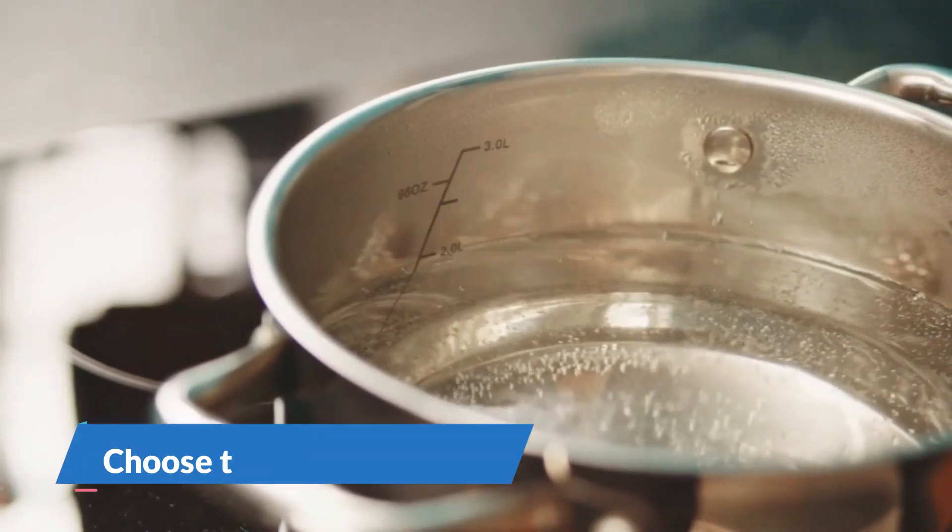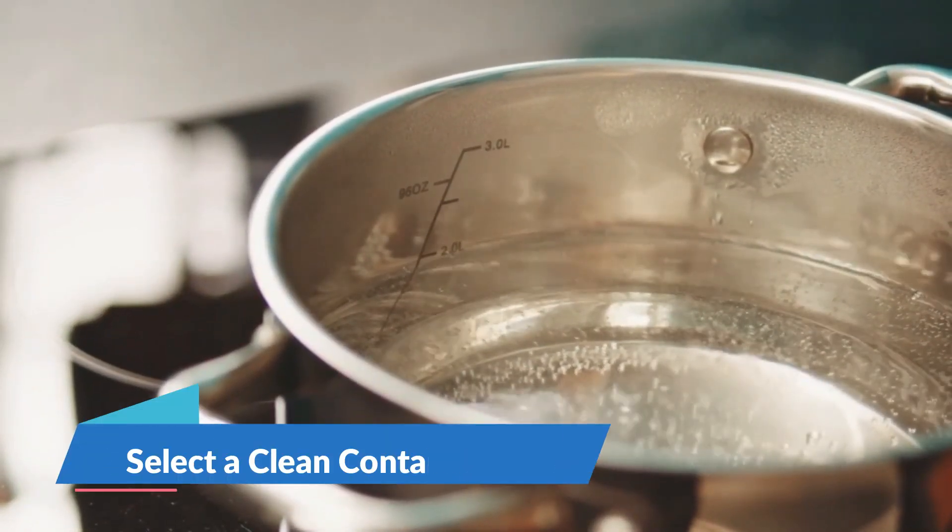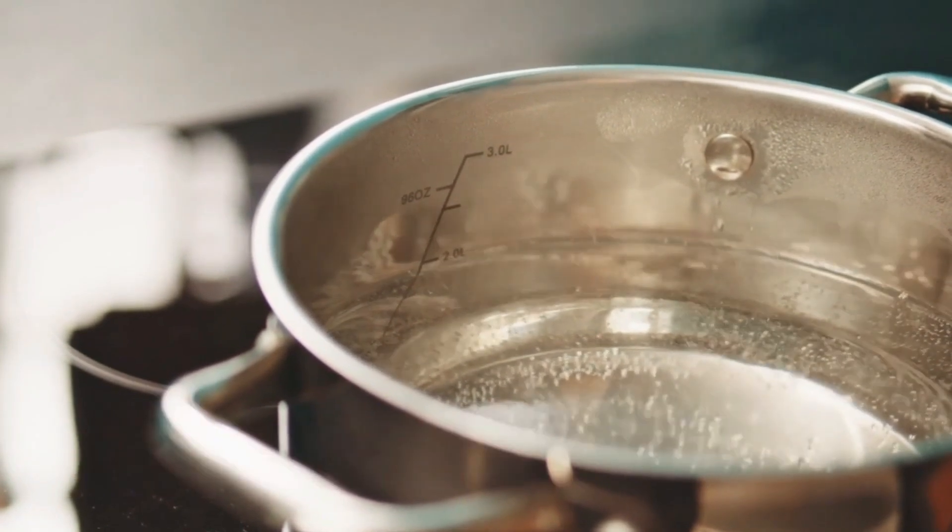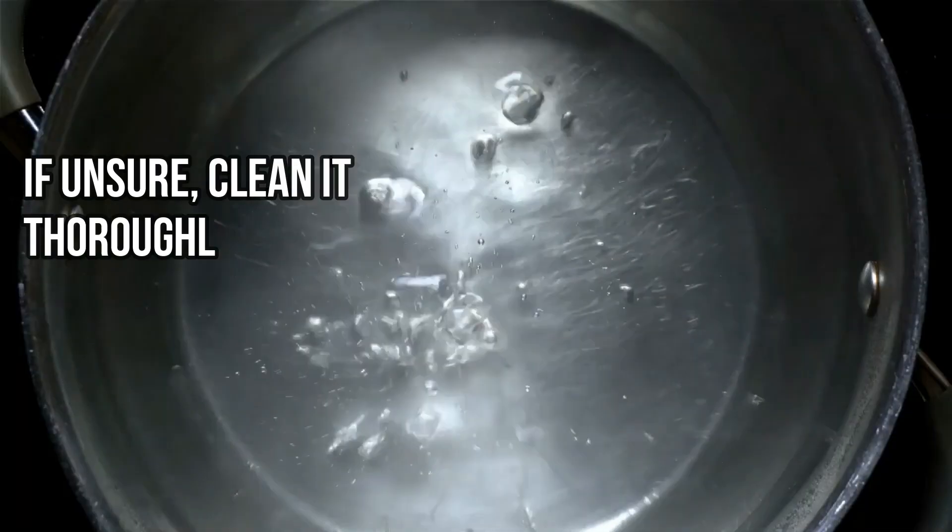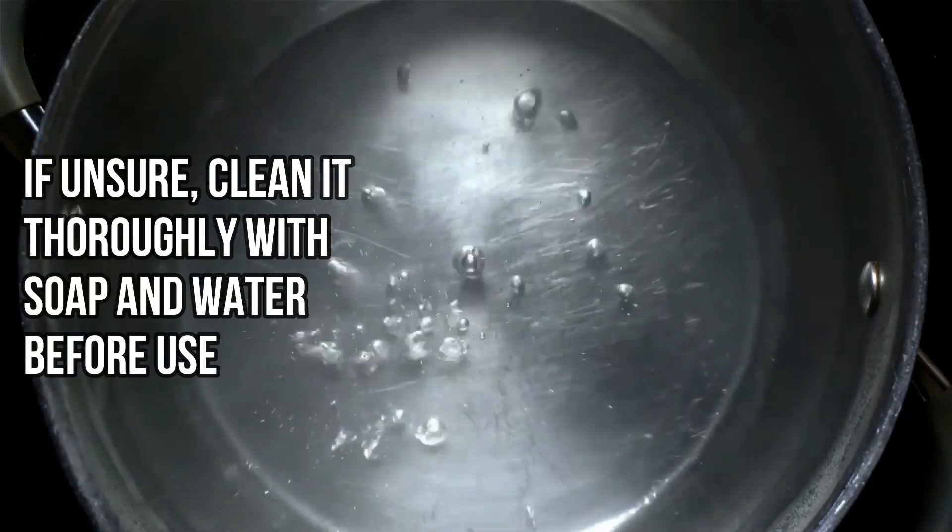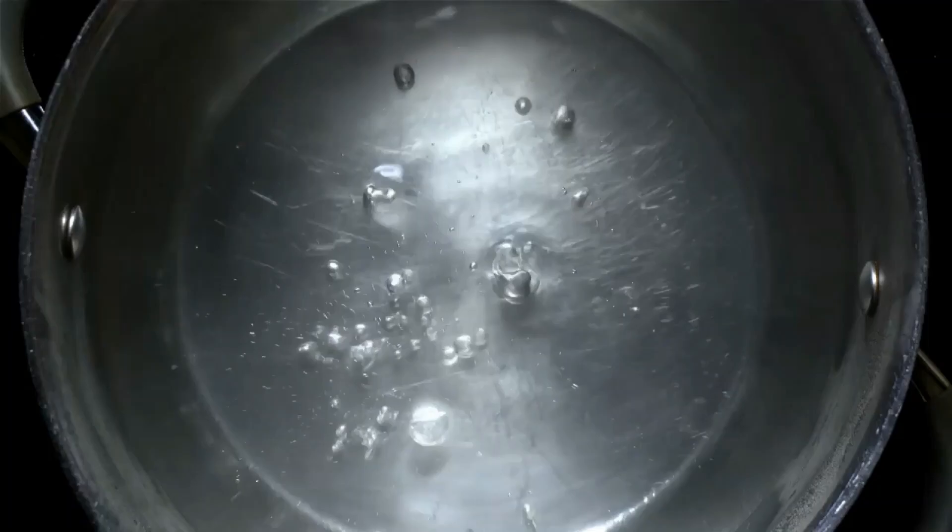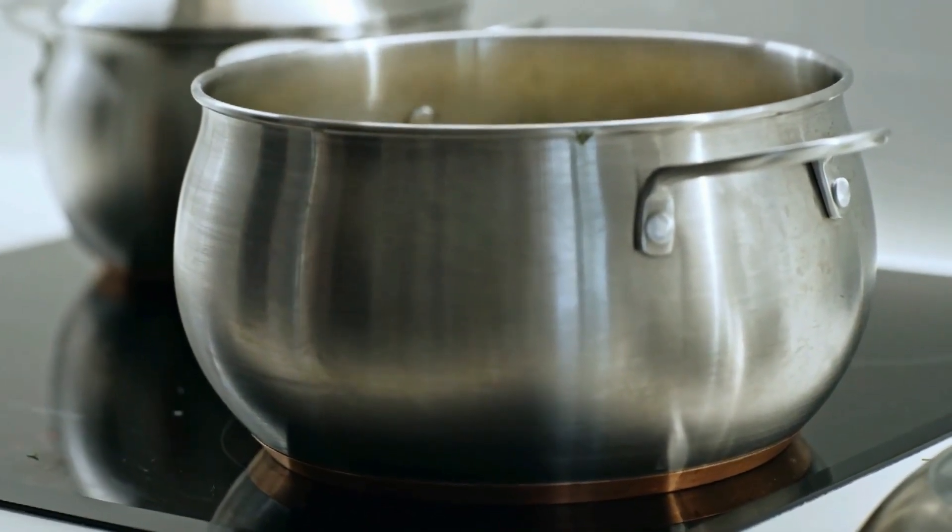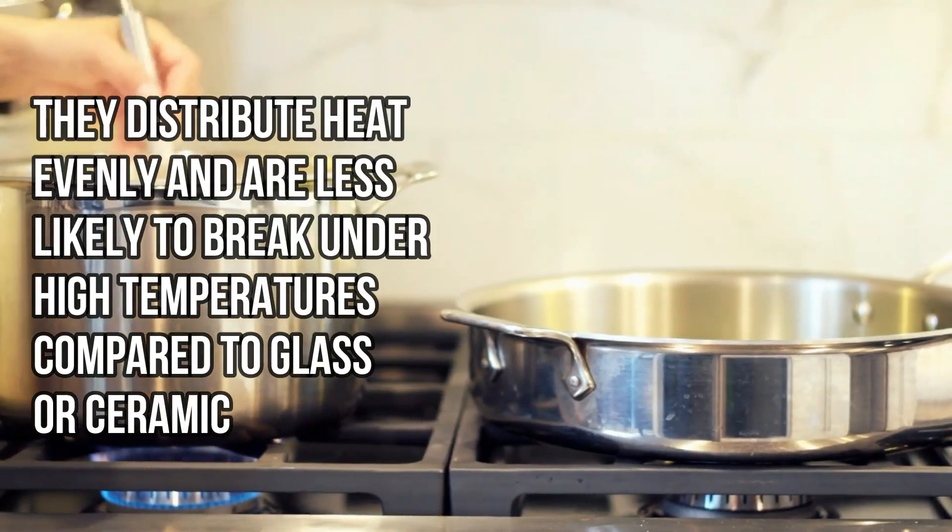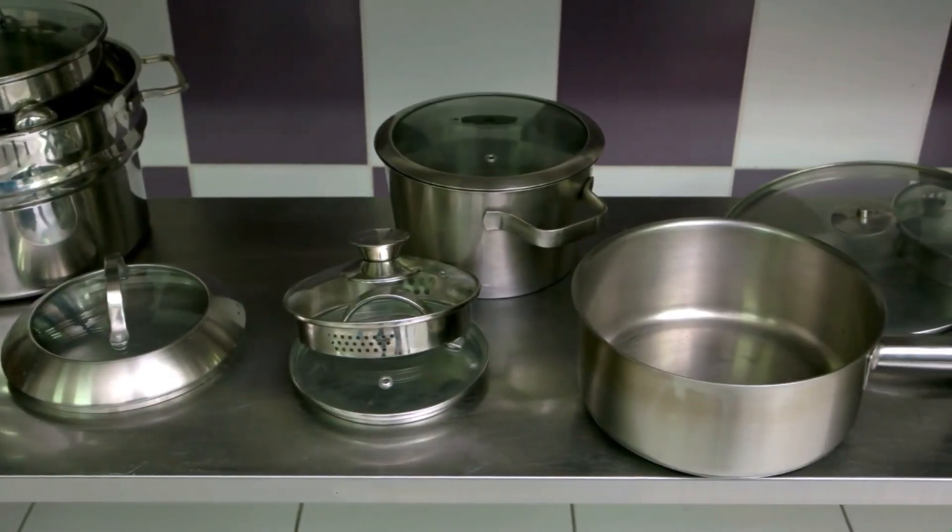Step 1: Choose the right container. Select a clean container. Use a pot or kettle that is clean and free from any chemical residues. If unsure, clean it thoroughly with soap and water before use. Material matters: Prefer metal containers, stainless steel or aluminum, as they distribute heat evenly and are less likely to break under high temperatures compared to glass or ceramic.